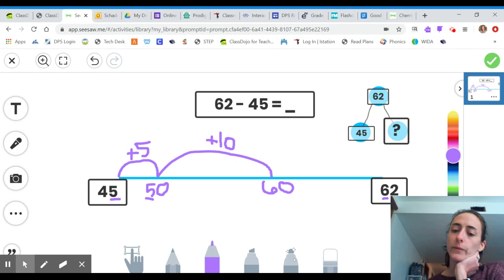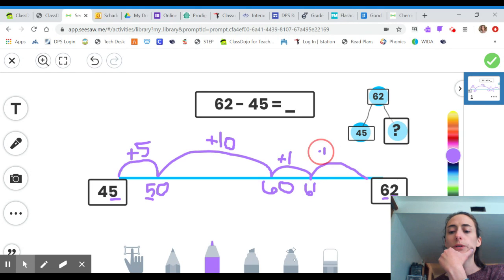Okay, oh my gosh, I'm so close to 62 now. I only need two more. I need two more ones. So one more, 61 plus one is 62. I got there.